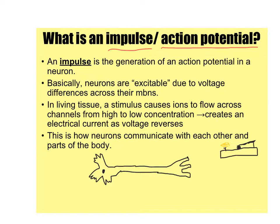First things first: neurons are what's called excitable. I'm going to compare it to a mousetrap — that's the best I could draw. This mousetrap is still set; you can see the little piece of cheese right there. It's just sitting there ready to fire. It is resting right now, in what a neuron would call its resting membrane potential, waiting for a stimulus that's strong enough.